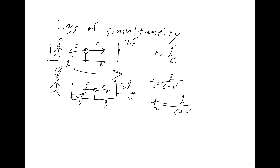Those are the three most fundamental effects of the two postulates: time dilation, length contraction, and loss of simultaneity. From these we can derive all sorts of other results about relativity, such as the Lorentz transformations, which are basically the transformation of one reference frame to another and are important for calculations in relativity. We've run out of time and won't go over them today. Thank you everyone for listening.